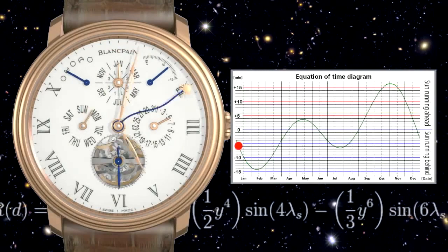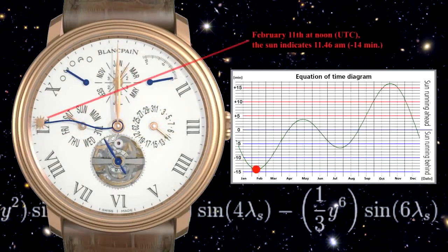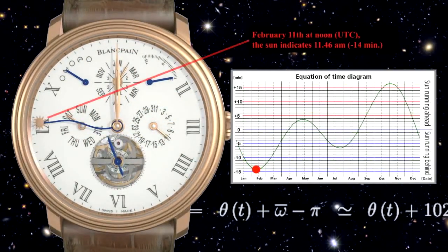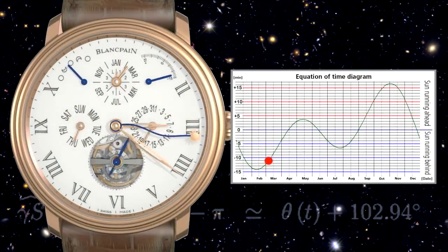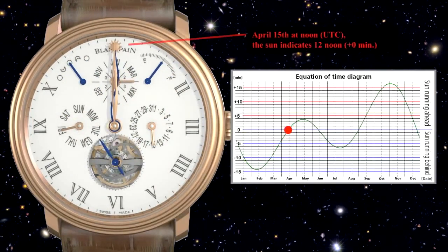Apparent solar time is the time between two successive crossings of the meridian by the sun. This can be measured using a sundial or other similar instruments as the time is displayed in the form of a shadow.